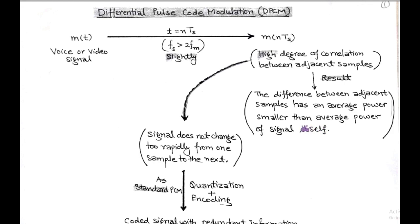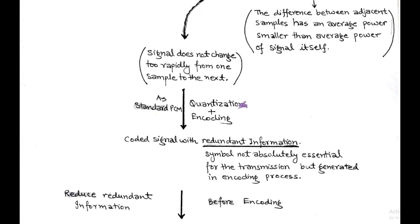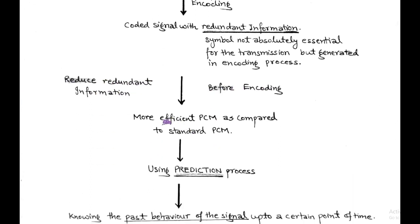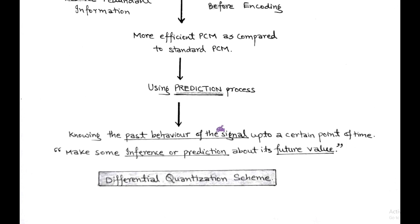Now after sampling, just like standard PCM, quantization and encoding process is performed. But in differential PCM, the coded signal is generated with some redundant information. This redundant information is not essential for transmission but is generated in the encoding process. In order to remove this redundant information before encoding, a more efficient PCM technique is used compared to standard PCM, and this technique is called the differential quantization scheme.